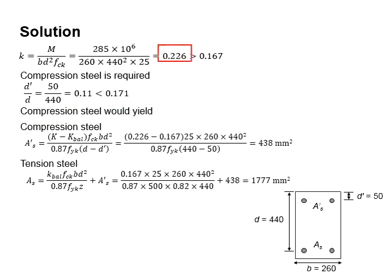Based on the k here, you know that you need to find AS' and AS. Based on the ratio d' per d here, you know that you can use full capacity of the compressive steel bar. This is the equation for AS' when the compressive steel bar can be used at full capacity. The required amount of the compressive steel bar is 438 mm².